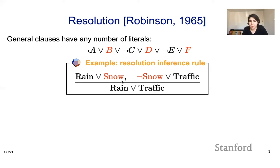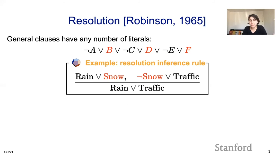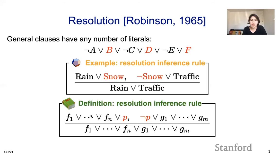Let's think about why we can infer this intuitively. If it is snowing, then from the second clause there has got to be traffic. And if it is not snowing, then there has got to be raining, because it's either snowing or raining. Intuitively, that is why you get rain or traffic — you can think of snow and negation of snow canceling each other out. More generally, given a clause F1 or ... or Fn or P, and another clause negation of P or G1 through Gn, the resolution inference rule concludes a new clause that cancels out P and negation of P.